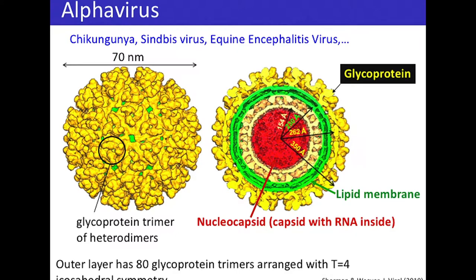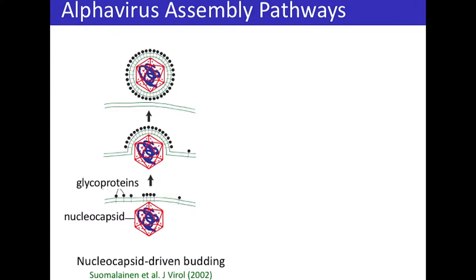In general, enveloped viruses acquire their membrane by two different pathways. In one pathway, the nucleocapsid is assembling on the membrane and driving deformation of the membrane. In the other pathway, the nucleocapsid first assembles in the cytoplasm, then targets the membrane, recruits glycoproteins, and drives budding. Alpha viruses are interesting because the traditional view is that they follow the second pathway: the nucleocapsid first assembles in the cytoplasm, then undergoes budding.